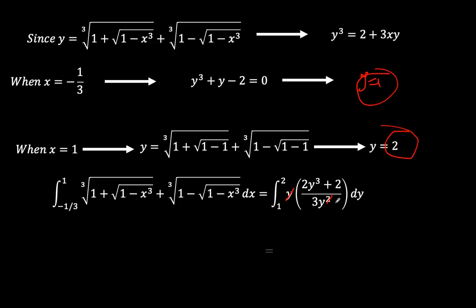and we're left with the 2 thirds comes out, and so the integral from y equals 1 to 2 of y squared, because we pull out the 2, and then 1 over y.